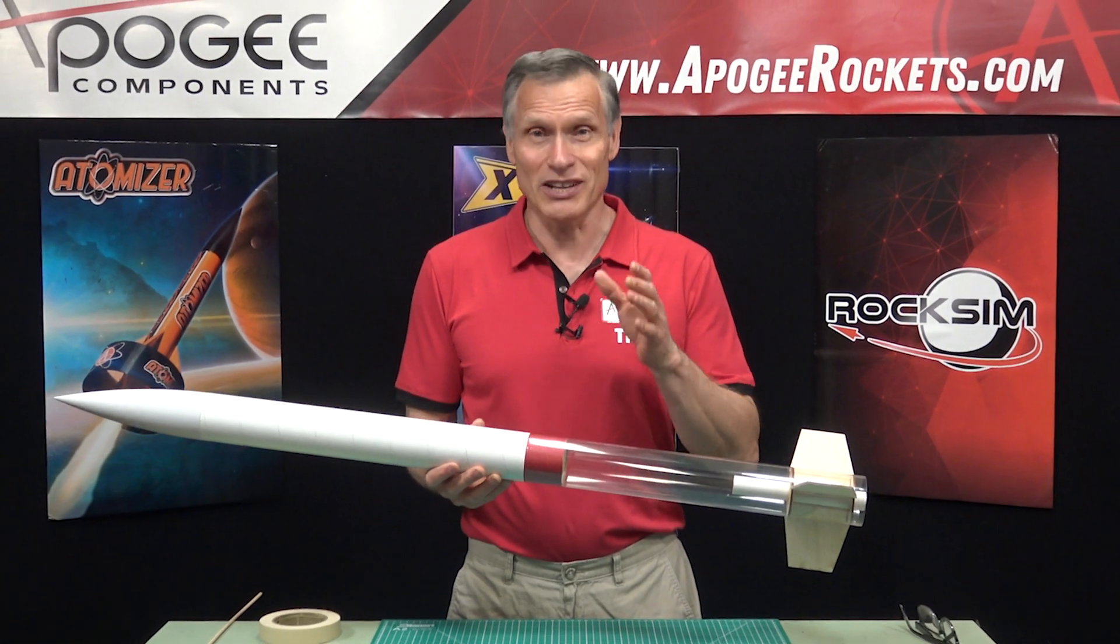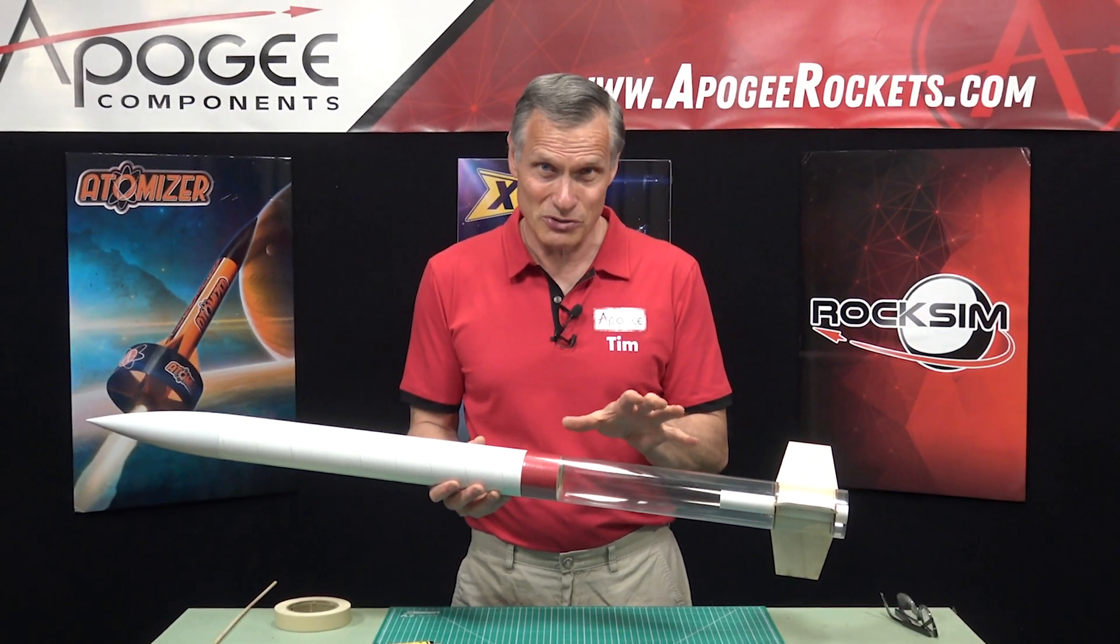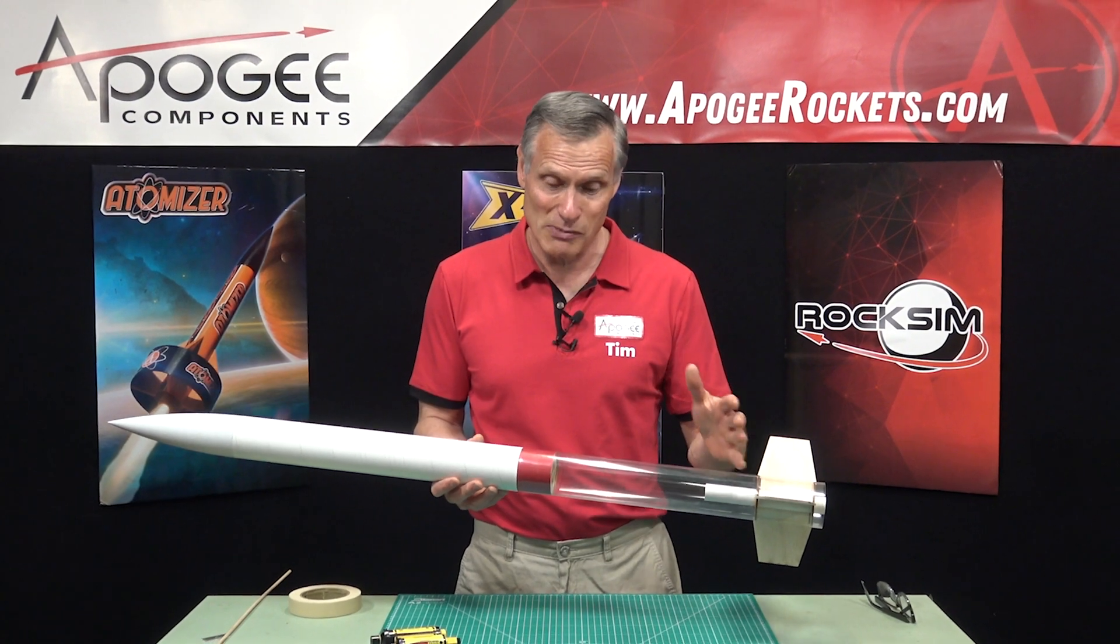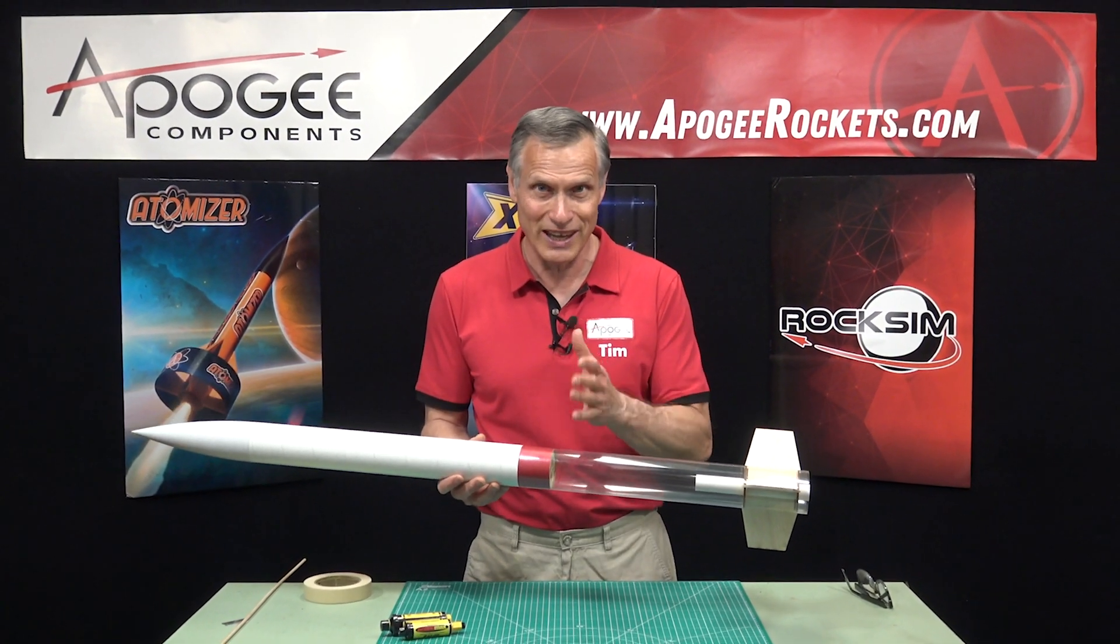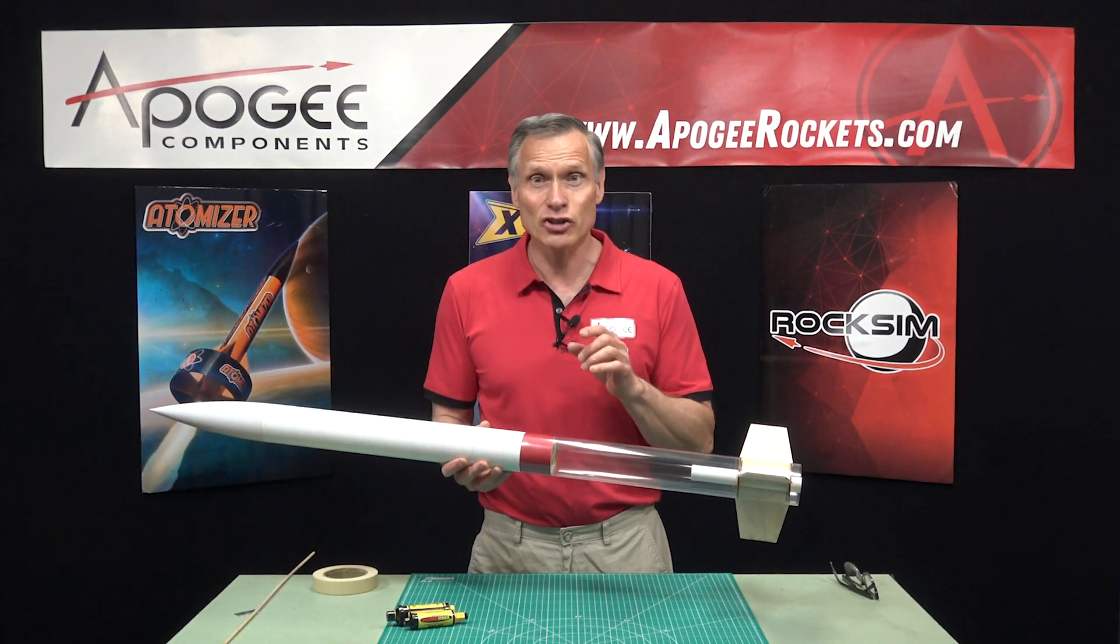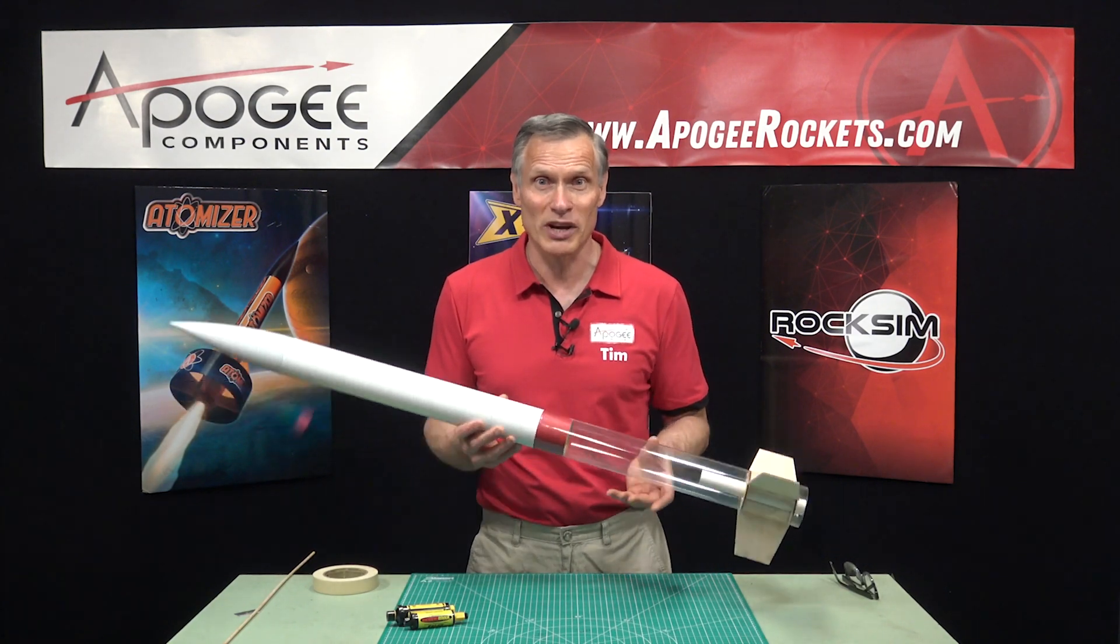Do you ever have a flight and you get something inside your rocket that's stuck between the engine mount and an ejection baffle and you can't get it out? I'm going to show you how to get it out in one simple little trick.